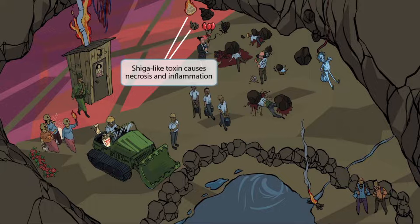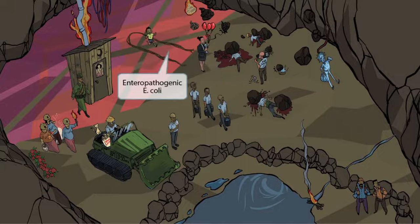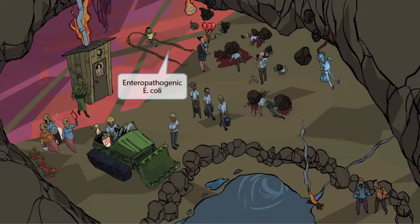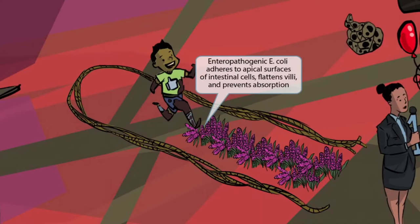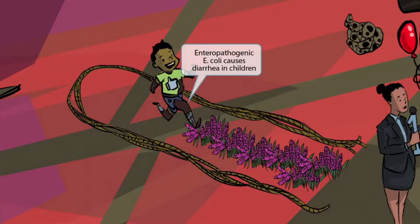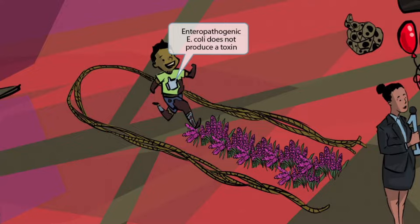That's everything you need to know about EHEC. Now let's discuss enteropathogenic E. coli. To represent this, we've shown a happy reckless kid running on a little pathway surrounded by ropes. Pathway sounds like enteropathogenic. The plants on the pathway resemble intestinal villi — the fact that he's smashing the plants should help you remember that enteropathogenic E. coli adheres to apical surfaces of intestinal cells, flattens villi, and prevents absorption. The mud on the child is here to help you remember that enteropathogenic E. coli causes diarrhea in children. The child is super happy and careless with a thumbs up on his shirt — this helps you remember that this strain of E. coli does not produce a toxin, so it's not as dangerous as EHEC.